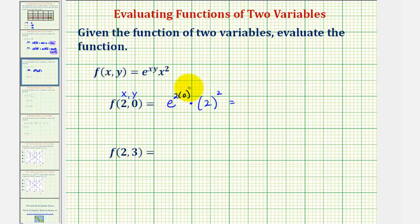Well, 2 times 0 is 0, so we'd have e^0 times 2 squared is 4, and since e^0 equals 1, f(2, 0) equals 4.